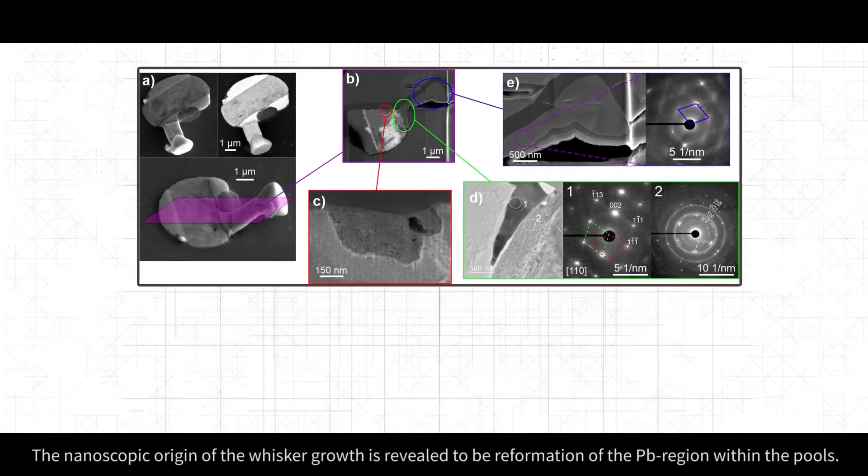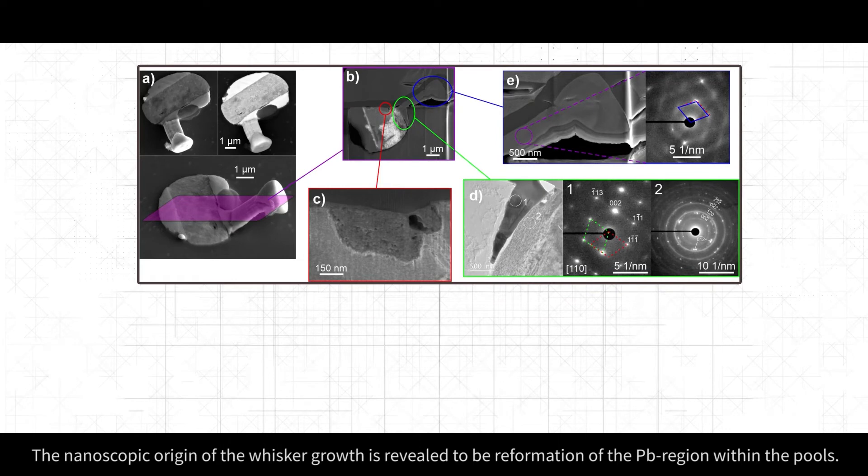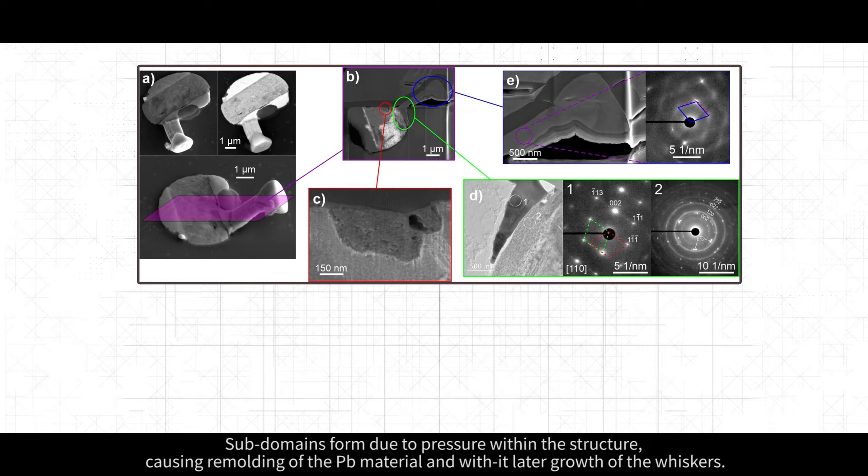The nanoscopic origin of the whisker growth is revealed to be reformation of the lead region within the pools. Subdomains form due to pressure within the structure, causing remolding of the lead material and with it later growth of the whiskers.